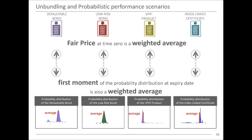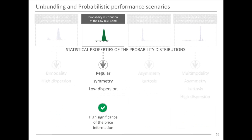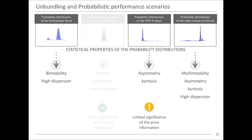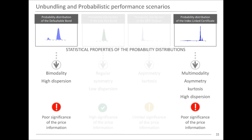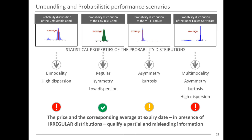For the index-linked certificate, the presence of different derivative components implies multimodality with skewness. In a certain sense, the statistical properties of the probability distribution give you the information you need to explore the features and risks of these financial products. Going back to the first-moment analysis — the fair value analysis — for a low-risk bond the price may convey some information because the distribution is quite symmetric with little kurtosis.